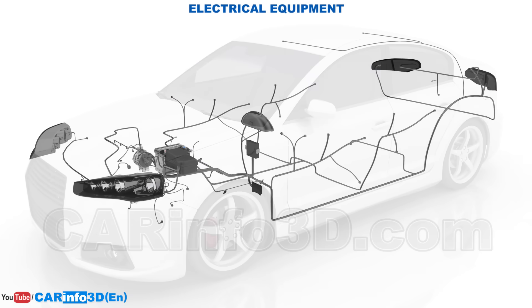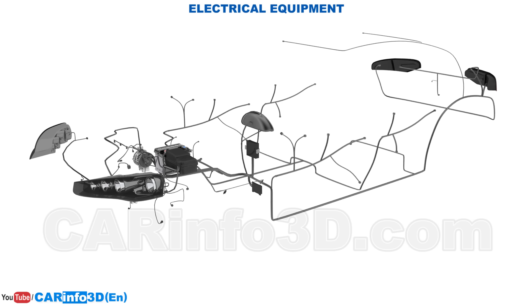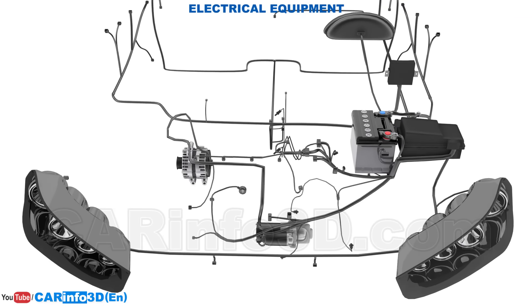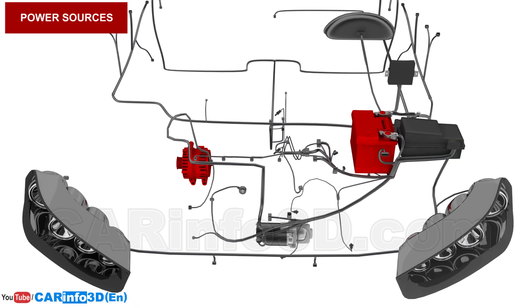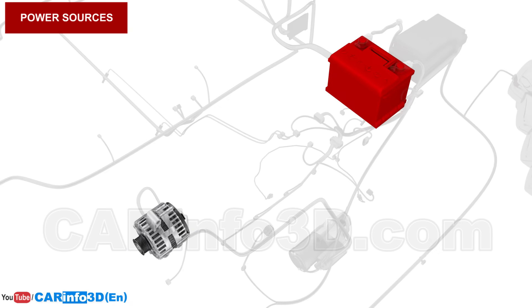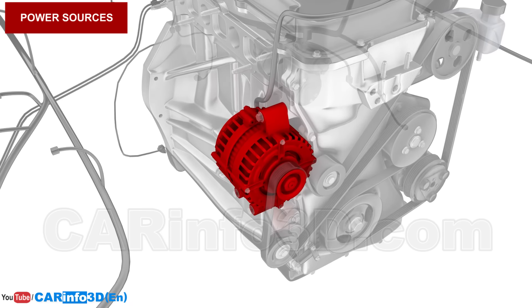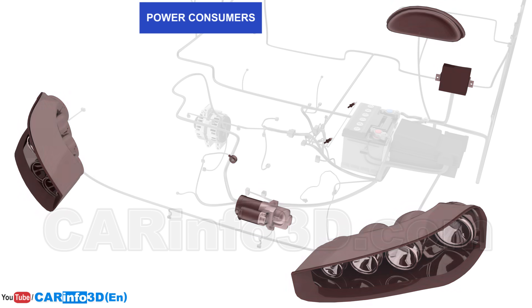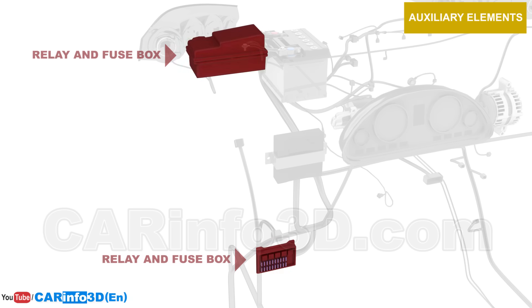Passing on to electrical equipment — modern vehicles are inconceivable without it. It stores, generates, transmits, and consumes electricity. Electrical equipment within a vehicle can be classified into a few categories: power sources, power consumers, electrical wiring, and auxiliary elements. Power sources are the battery and the generator. Power consumers include various appliances that require electricity, such as headlights, the starter motor, the engine control unit, and others. Electrical wiring connects the various components of the electrical system. Auxiliary elements include relay and fuse boxes, as well as various buttons and switches.